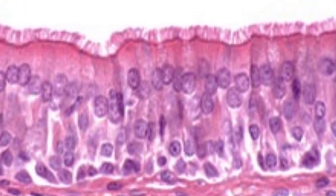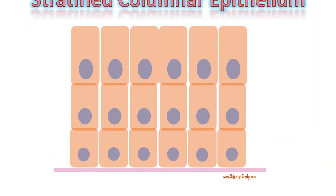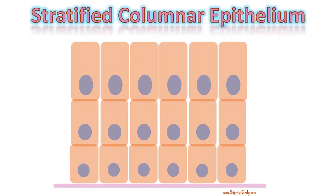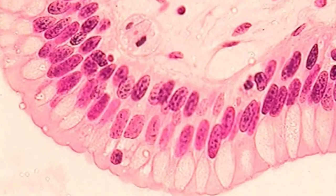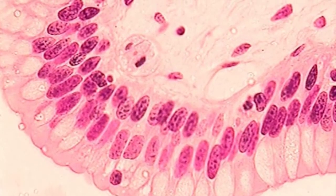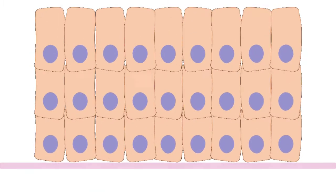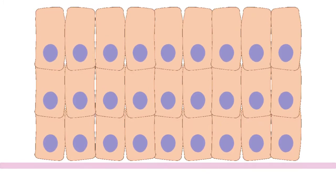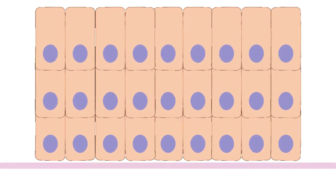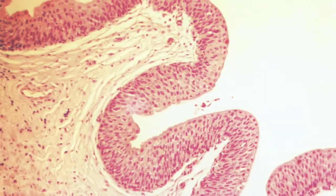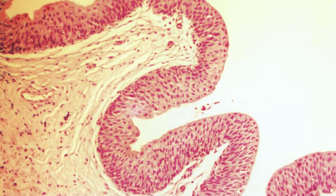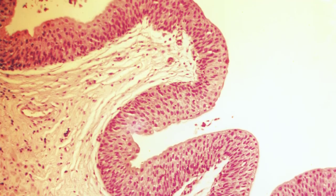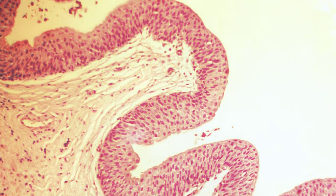In the trachea, we see ciliated pseudostratified columnar epithelium lining the respiratory tract, with column-shaped cells that have hair-like projections at the apical surface. Stratified columnar epithelium is a very rare tissue type composed of column-shaped cells arranged in multiple layers. It is found in the conjunctiva, pharynx, anus, and male urethra.